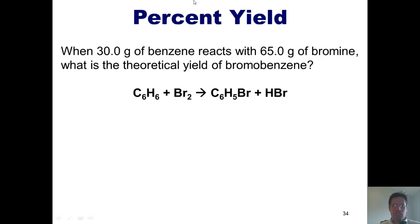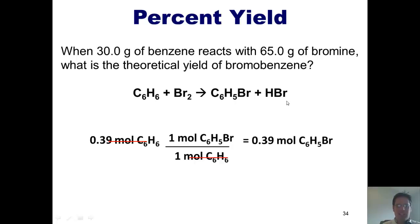The question asks me the theoretical yield of bromobenzene. I've got 0.39 moles of benzene. I have to convert that into moles of bromobenzene. How do we do it? Same way we've done it before. Moles of benzene in the denominator, moles of bromobenzene in the numerator. And you'll note they're present in a one-to-one ratio stoichiometrically in this balanced chemical equation. Plug and chug. I discover I've got 0.39 moles of bromobenzene.